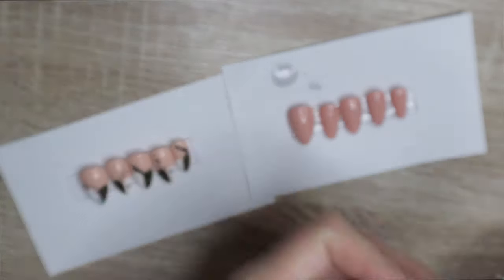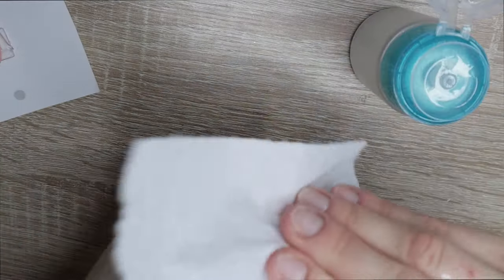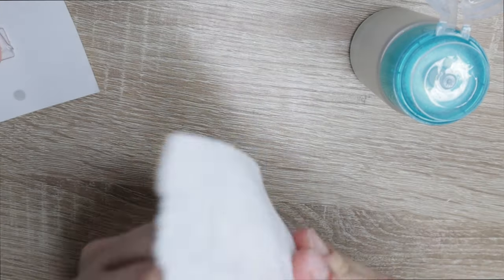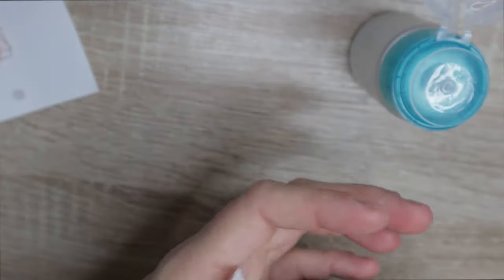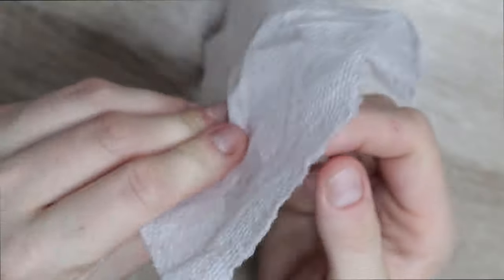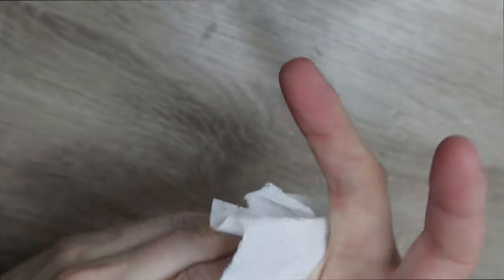The first thing I do, like always, is clean my nails with rubbing alcohol. I'm trying to get off all of the oils. Sticky tabs do not like oil or lotion, so this step is crucial to dehydrate my nails as much as possible.